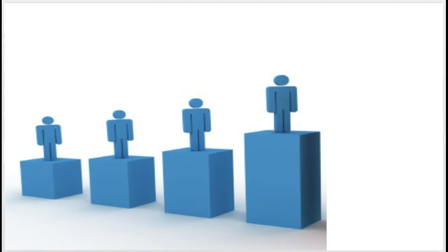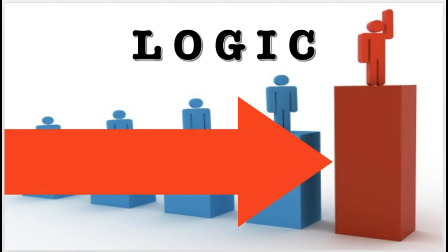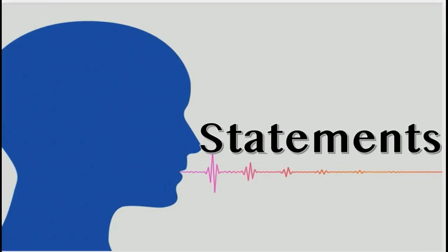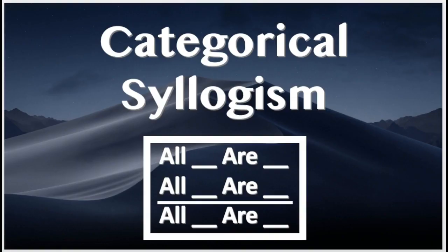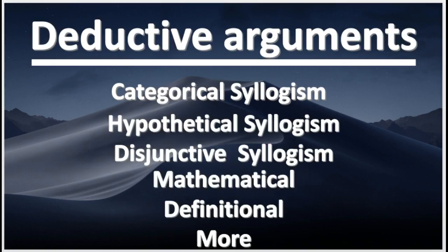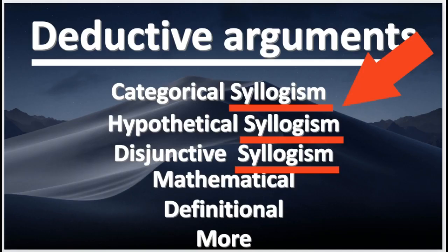Ladies and gentlemen, welcome to the next level of logic. In this level, you will learn to master categorical propositions. Categorical propositions are the statements of a categorical syllogism. A categorical syllogism is a particular deductive argument. There are only a limited amount of formal deductive arguments. You will learn to identify and master these deductive arguments. These formal deductive arguments are known as syllogisms.